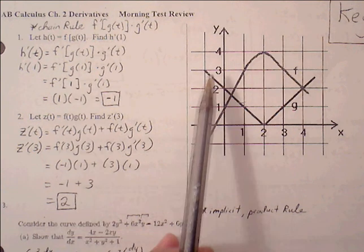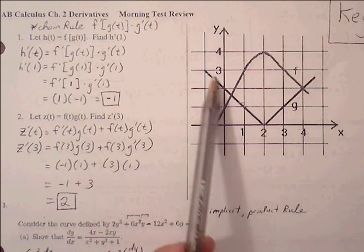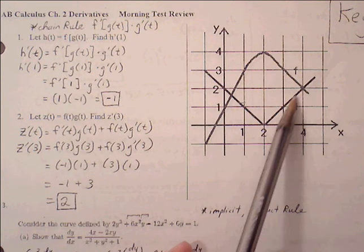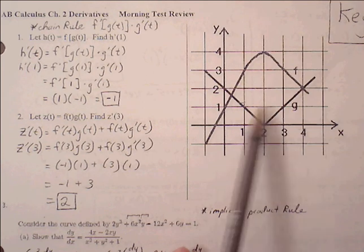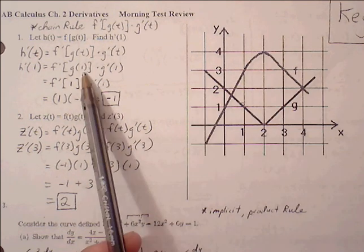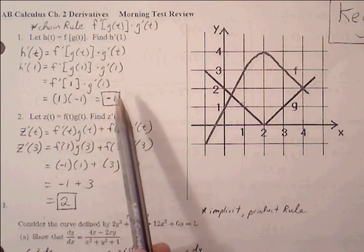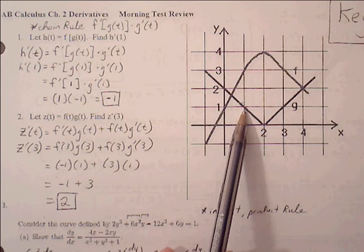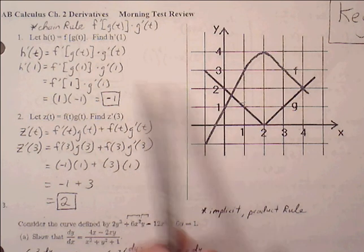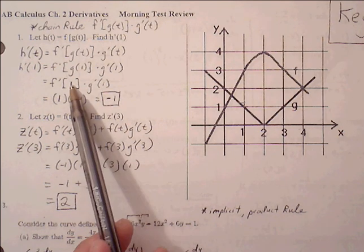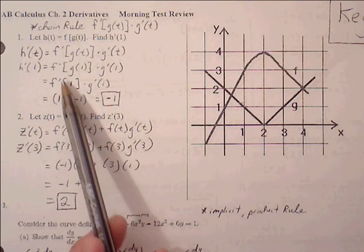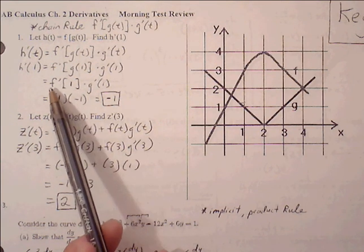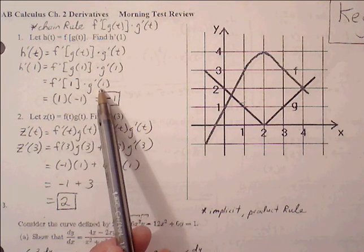So g of one — that's going to be this v-shaped function here. G of one is simply asking for what's the y value for the g function at x equals one. So g of one is equal to one. The y value is one, so I can replace g of one with one. Now we're down to f prime of one times g prime of one.